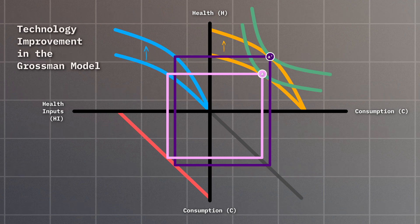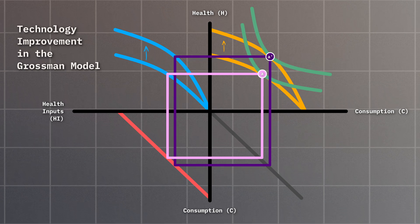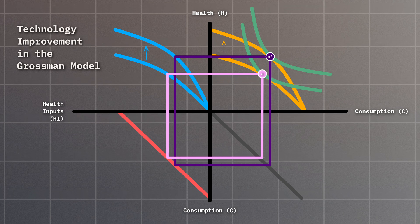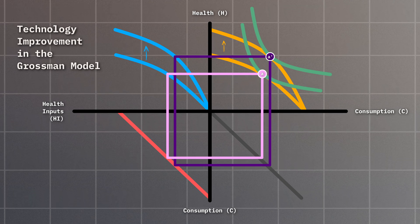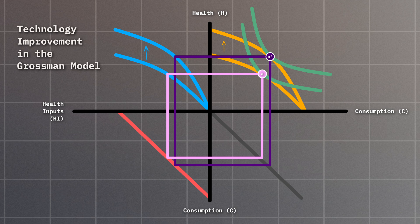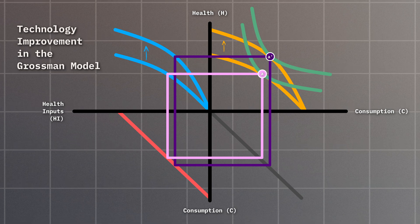This exemplifies another practical implication of the Grossman model, demonstrating how higher levels of education reduce the demand for health inputs, implying that injustice in education is likely linked to injustice in healthcare. It's insights like these that make the Grossman model so influential in health economics.